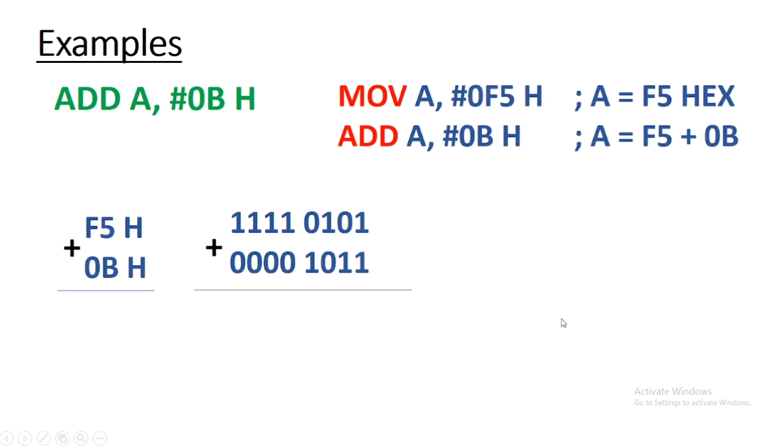We take one more example. Suppose if I want to add 0BH in accumulator, and before adding 0BH in accumulator, I have moved F5H in accumulator using this instruction. And after that, I am adding 0BH into accumulator.